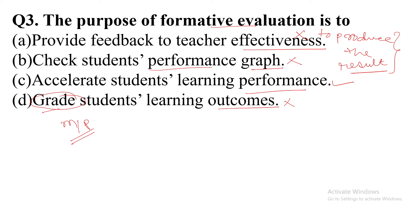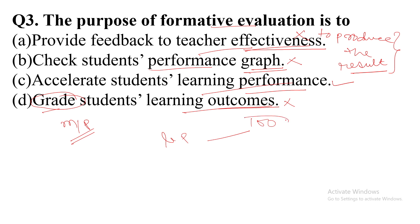I told you that you can easily solve this. Here is the shortcut: look at the keywords — teacher effectiveness, graph, learning performance, learning outcome. In formative evaluation, the teacher checks the learning performance to see the topic-wise knowledge of students — how much knowledge students gain after a particular topic. That is why the teacher takes the test unit-wise, and it does not provide marks or grades.